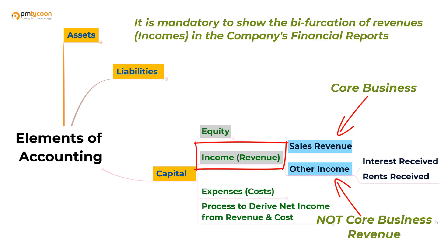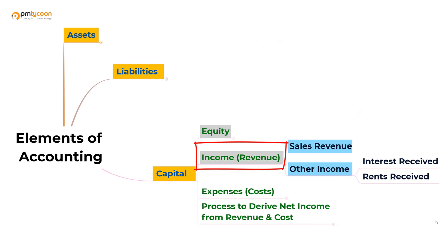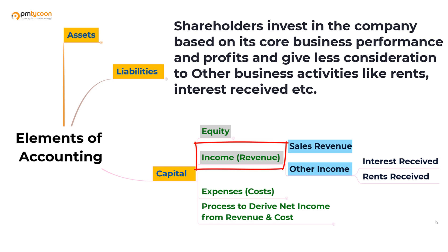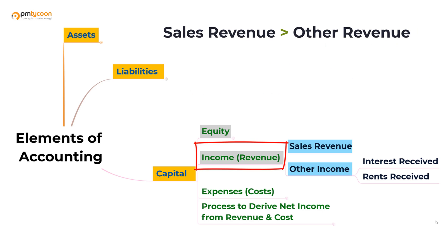I'll tell you the reason why it is important. If you are a shareholder trying to invest in a company, it is important for you to understand how much income the company is getting from its core business operations, as it will give you a clear indication of how the company is performing in its sector. If it is not getting money from its core operations and getting money from other activities, that is not ideal. The revenue from core operations should be higher than revenue from other activities.